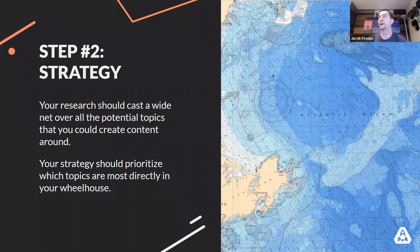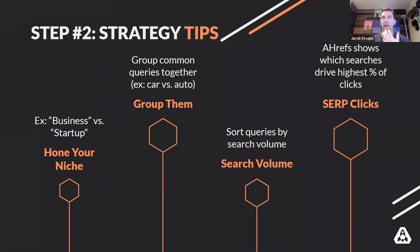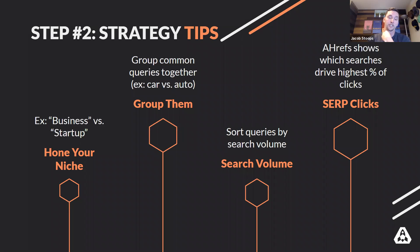Once you're starting to get into the phase where you're ready to start creating, it becomes about figuring out here are all of the places that you could fish, so to speak, but here's where you should fish. It is about finding your strategic niche. The example I like to give on honing your niche is business versus a startup — business being a very broad topic. But what if you're talking specifically about startups? That is a sub-niche within business and you may be more qualified to talk specifically about the different aspects of startups, and less qualified to talk about business as a whole.